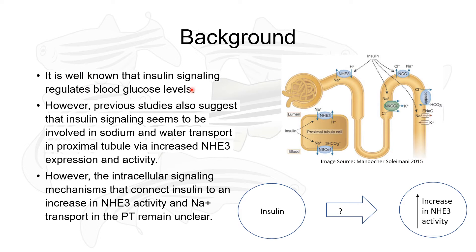It is already well known that insulin signaling regulates blood glucose levels; however, previous studies also suggest that insulin signaling plays a role in proximal tubule transport through a stimulatory effect on NHE3 expression and activity. This stimulatory effect means that insulin could lead to an increase or decrease in NHE3 activity, which would have a great impact on body functions such as blood volume and blood pressure. However, the signaling mechanisms that link insulin to the stimulation of NHE3 activity and proximal tubule transport remain unclear.